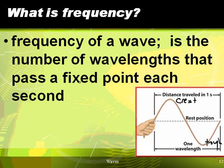The fixed point that we're thinking about is its period. We want to know, what is the amount of time it takes for one of these wavelengths to pass a fixed point? We call that the period.